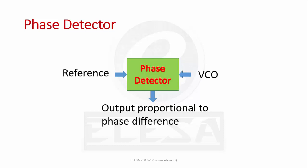The PLL consists of three basic blocks such as phase detector, low pass filter, and voltage controlled oscillator. Let's see individual blocks in brief.